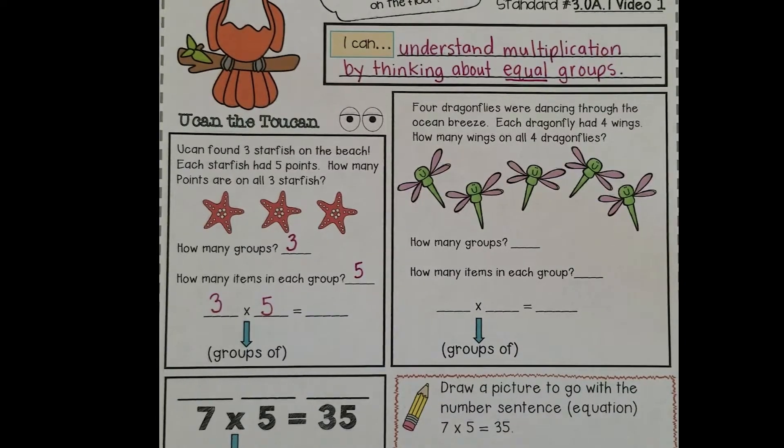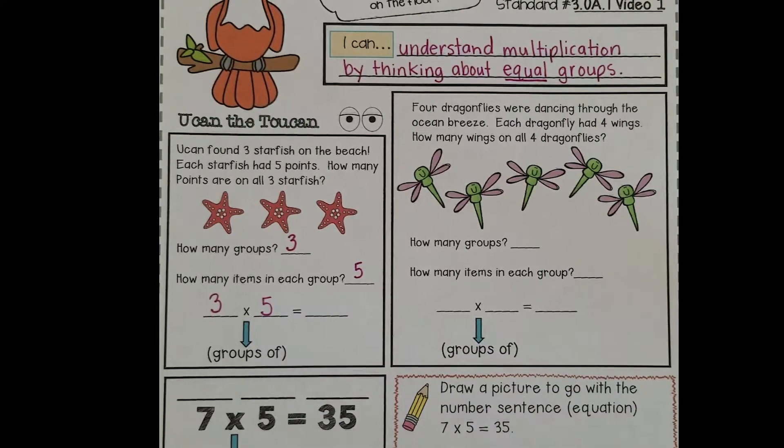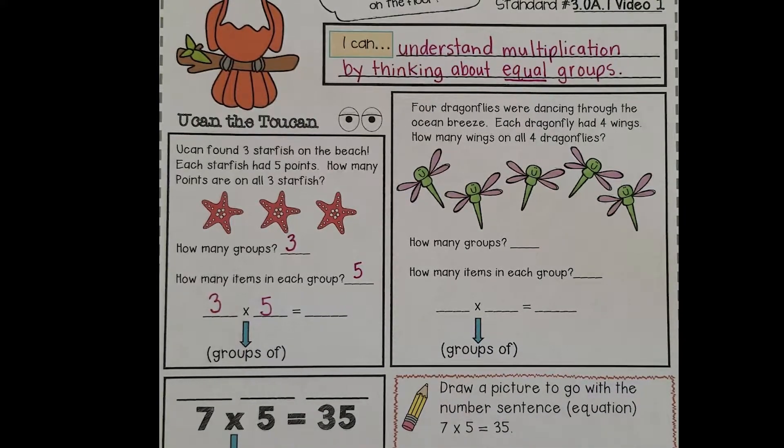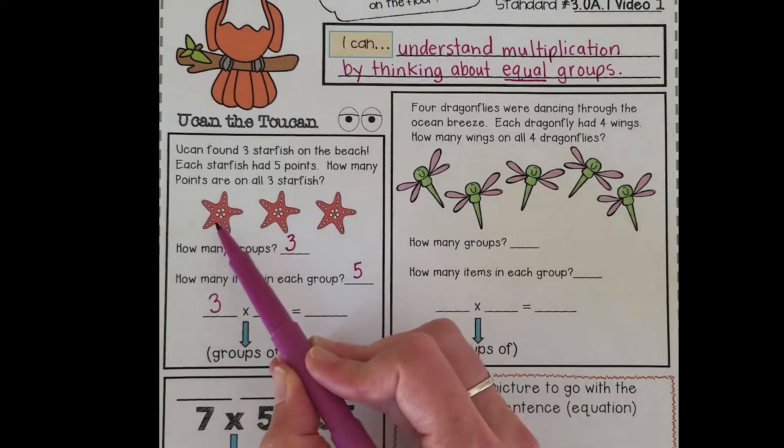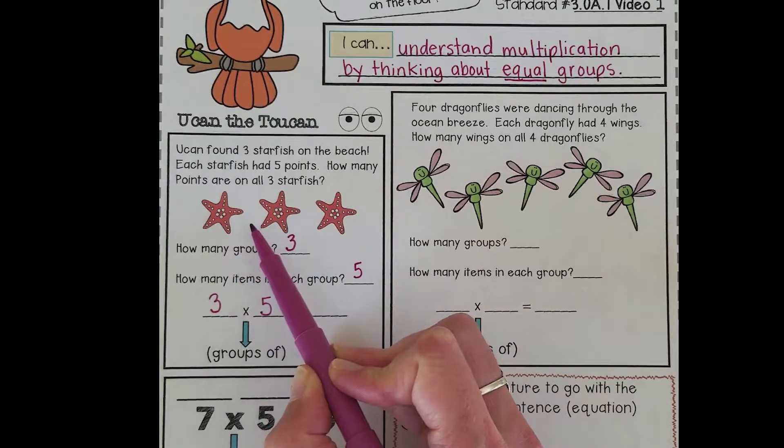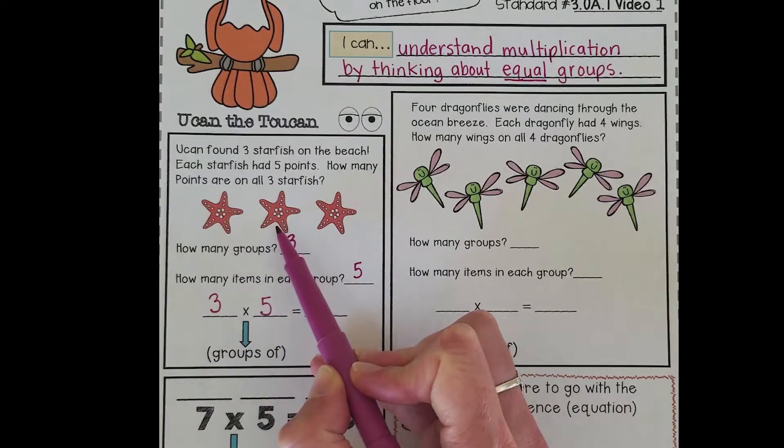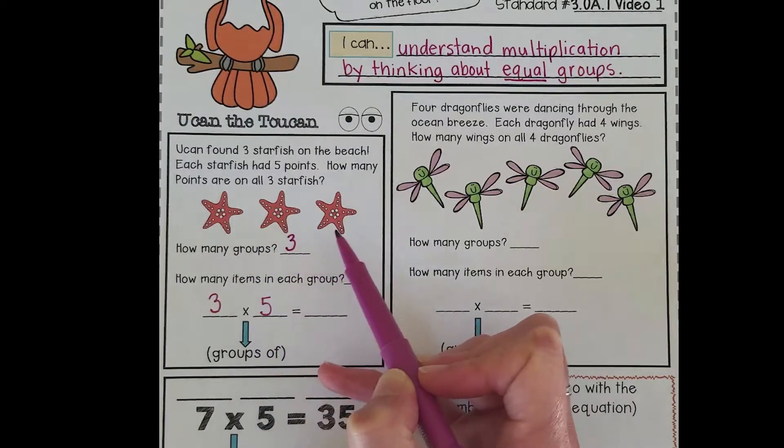Sometimes counting takes too long. If we had lots of equal groups it might take us a long time to count. So another way we can figure out how many items are in our equal groups is by adding, because that's what multiplication is - it's just repeated addition. So I could add 5 plus 5 is 10, plus another 5 is 15.